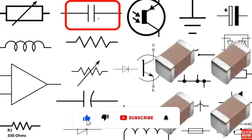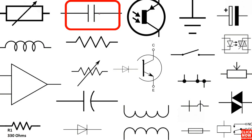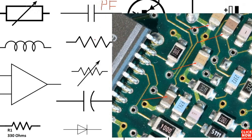This is the symbol for the ceramic capacitor, also called a PF capacitor. This kind of capacitor is not polarized — it's not like the electrolytic capacitor. PF means picofarad capacitor. As you can see here in the image, these are some real ceramic capacitors.